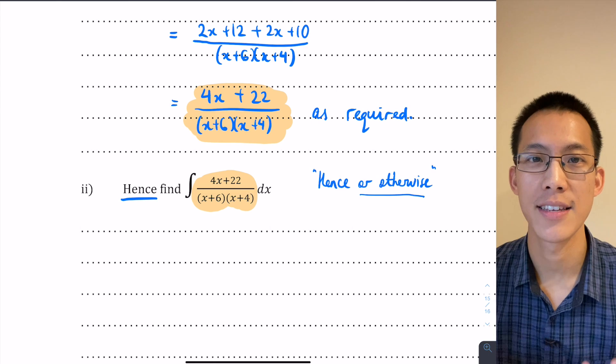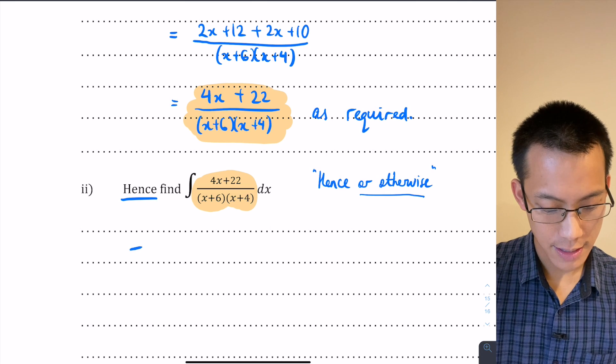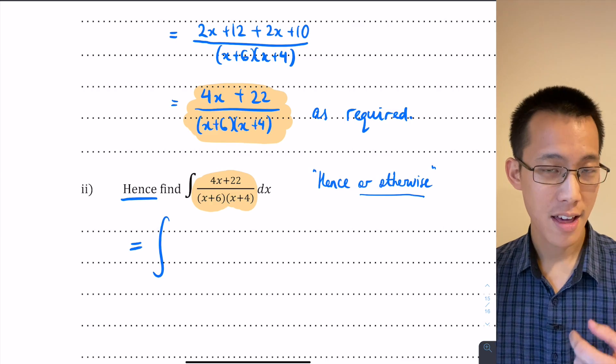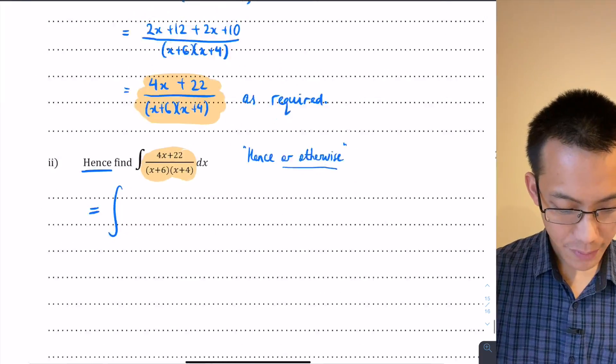You can integrate either of them if they are indeed the same function. So that's what I'm going to do. I'm going to say this is equal to the integral of, and instead of writing the left-hand side of the equation, I'm going to write the right-hand side of the equation. So that is 2 over (x+4)...